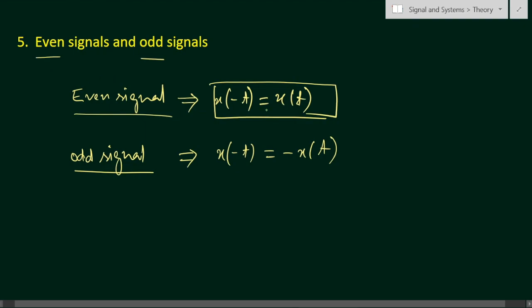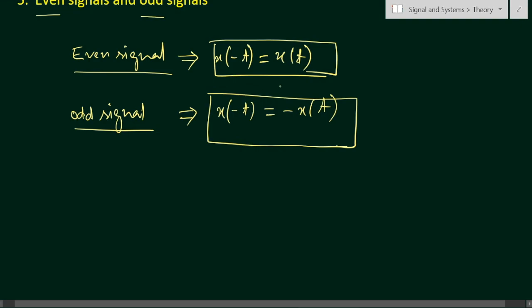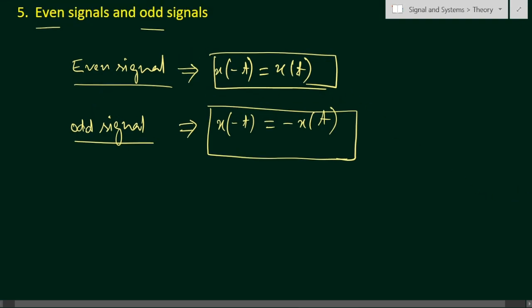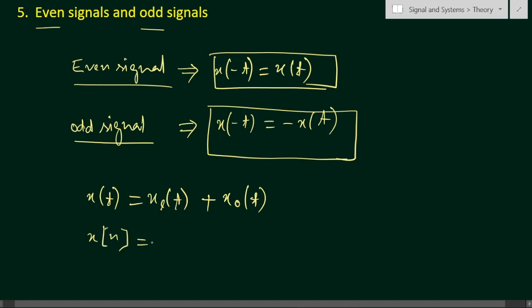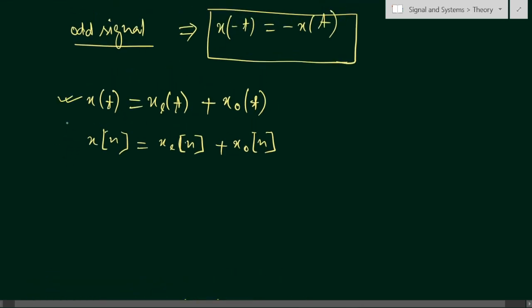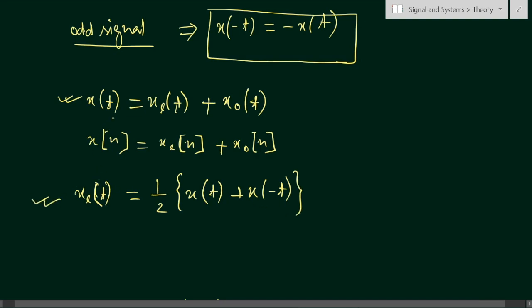The fifth classification is even and odd signals. For an even signal, x(−t) equals x(t), and for an odd signal, x(−t) equals minus x(t). Any signal can be expressed as the sum of its even and odd parts: x(t) equals x_e(t) plus x_o(t). For a discrete time signal: x[n] equals x_e[n] plus x_o[n]. The even part formula is: x_e(t) equals half of [x(t) plus x(−t)].